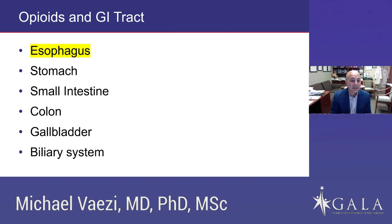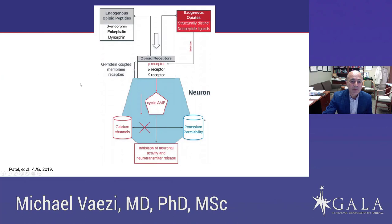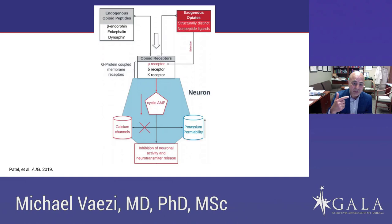We are talking about exogenous opioids, which are structurally distinct from endogenous opioid peptides. These opioids impact the mu receptors predominantly in the GI tract. These receptors are predominantly in the myenteric plexus and are G-protein-coupled membrane receptors. The impact of this interaction is reduction in cyclic AMP, impact on calcium channels, and increased potassium permeability. This leads to inhibition of neuronal activity and neurotransmitter release, causing esophageal dysmotility.